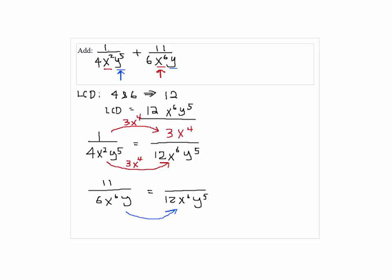For the bottom one, to get from the left hand side to the right hand side, we multiply 2y to the 4th power. So, we do the same thing on top so we get 22y to the 4th power.